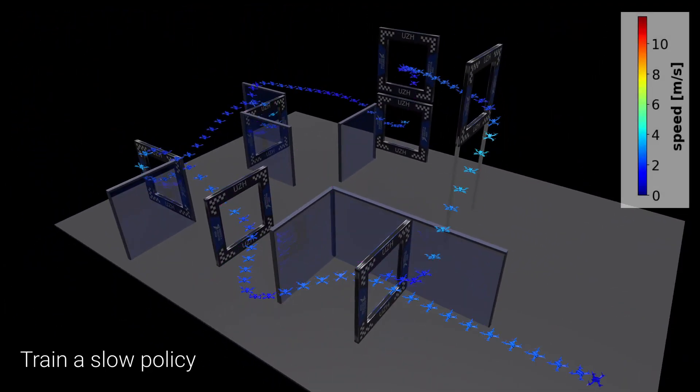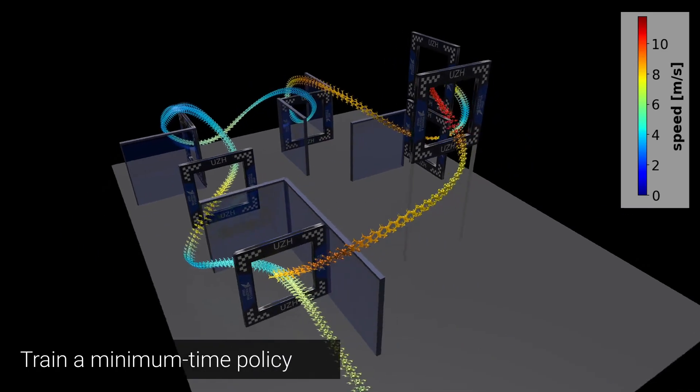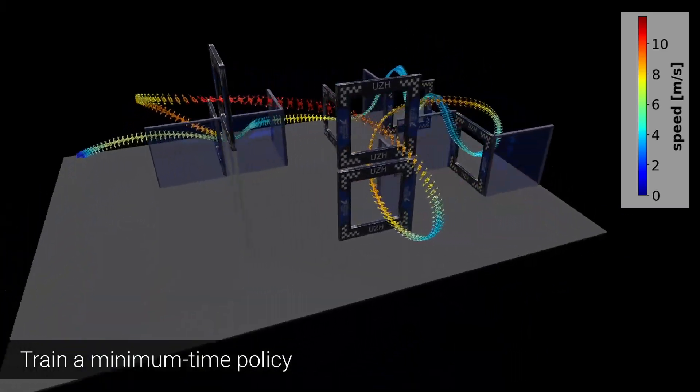The policy is then trained in a curriculum fashion where it first learns to fly slowly around the track and avoid collisions. After this, the constraints on velocity and distance from the guiding path are removed and the policy learns to fly around the track in minimum time.